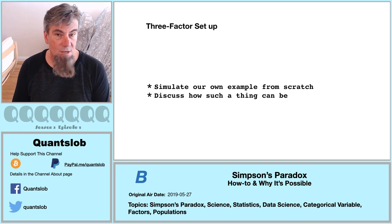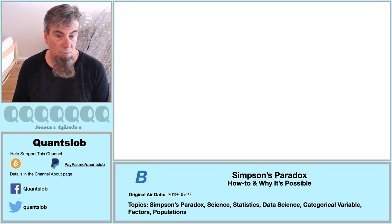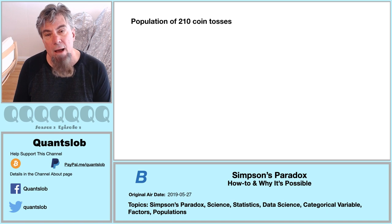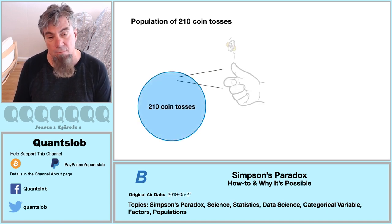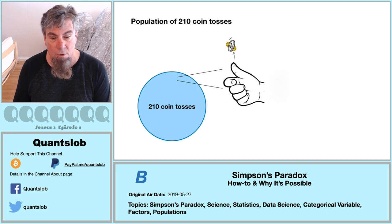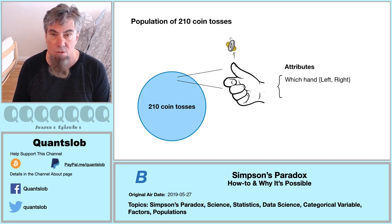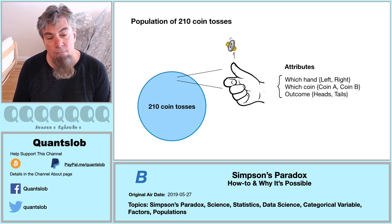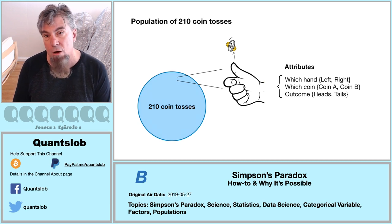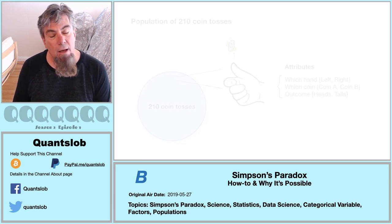We start by imagining a population of 210 coin tosses. We ascribe three categorical attributes or factors, each with two categories: which hand was used to toss the coin — left or right; which of two coins were used — coin A or coin B; and lastly, the outcome of the flip — heads or tails.